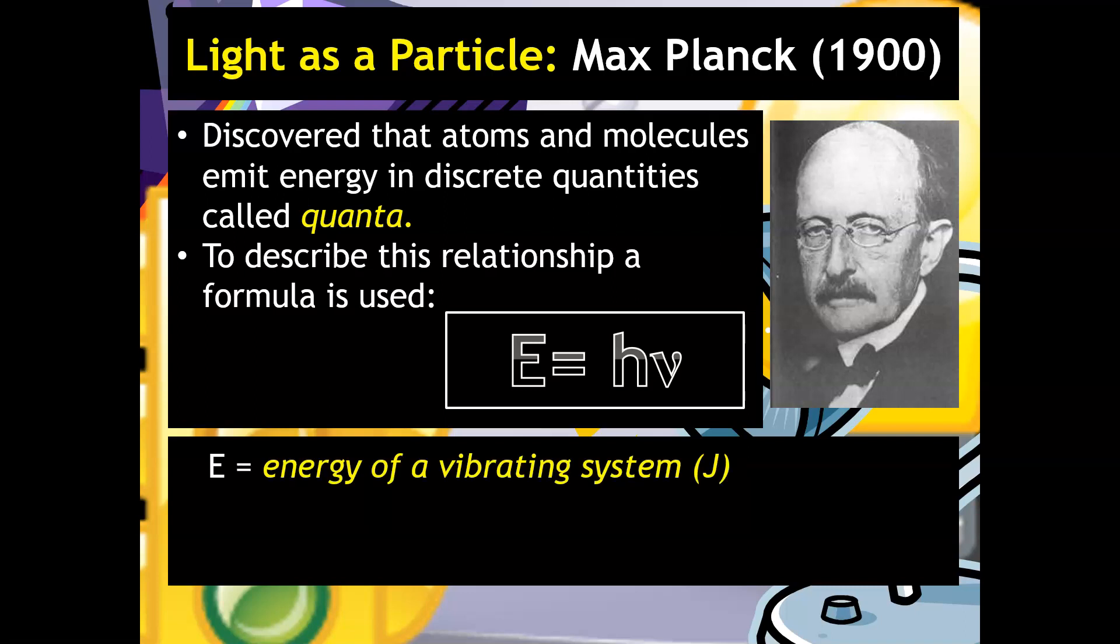So energy is energy of your vibrating system in joules, the unit is joules or J. H is a constant, again, similar to the speed of light that is never going to change. That is always going to be the number that you're going to be using. And then frequency again is in reciprocal seconds or Hertz.